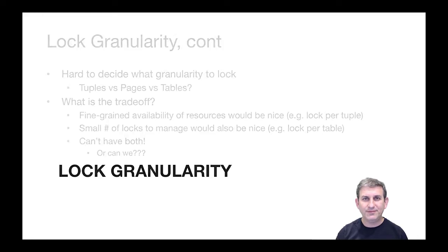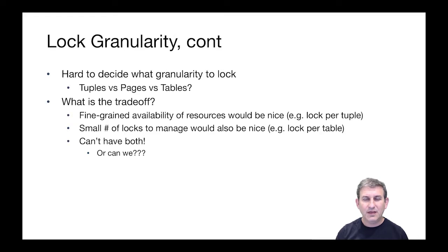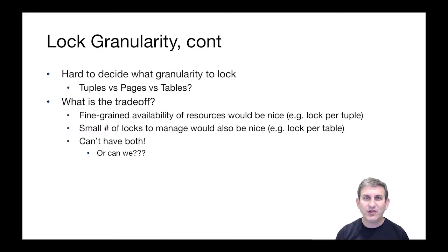Lock granularity. When you're implementing a database management system, it can be hard to decide what granularity of object you should be locking in your lock manager. Should you lock tuples or pages or tables? What about if you lock the entire database as the object to lock? That's clearly not a good idea because then you would have serial execution of all your transactions. So we know that we want something finer-grained than the database itself, but what is the right granularity to choose?